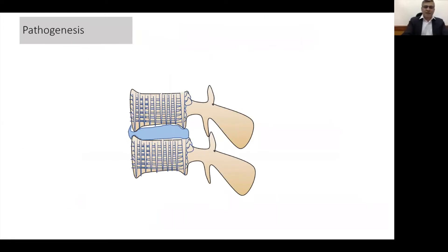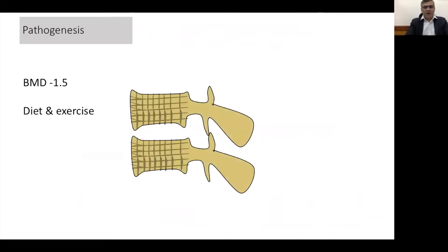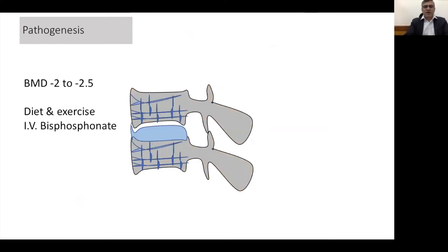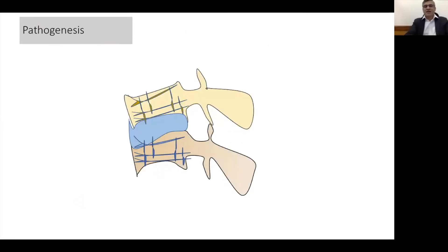If we understand the pathogenesis of an osteoporotic fracture, a bone is always composed of densely packed trabeculae. As we keep aging, because of age, hormonal changes, and disease, these bones become very brittle over a period of time, and they tend to fracture with the most trivial amount of forces, resulting in what we call an osteoporotic fracture.